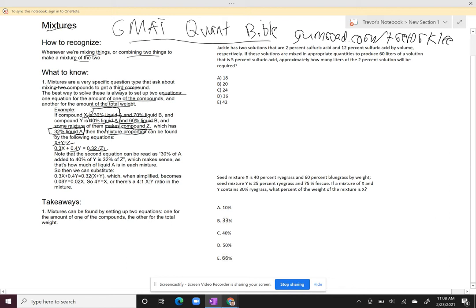So then I can simply substitute, and I get 0.3X plus 0.4Y equals 0.32 times X plus Y, and I get 0.08Y equals 0.02X. So 4Y equals X, or there's a 4 to 1 X to Y ratio in the mixture.